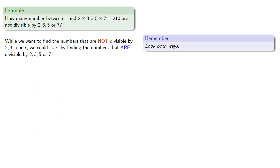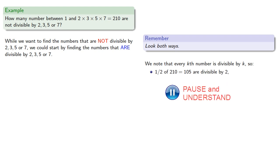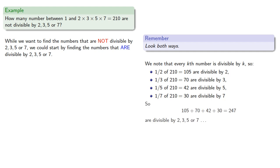We know that every kth number is divisible by k, so 1/2 of our numbers are divisible by 2, 1/3 are divisible by 3, 1/5 are divisible by 5, and 1/7 are divisible by 7. So if we add these up, we get 247 are divisible by 2, 3, 5, or 7, although we've counted some numbers more than once.